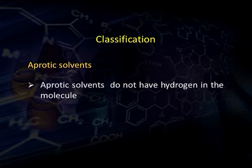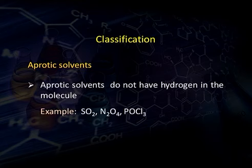Aprotic solvents are those which do not have hydrogen in their molecule. Examples include SO₂ (sulfur dioxide), N₂O₄ (dinitrogen tetraoxide), and POCl₃ (phosphorus oxychloride). We can see that none of these three examples contain any hydrogen atom in their formula; therefore they are aprotic solvents.